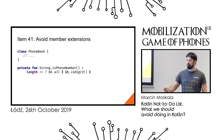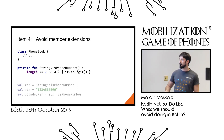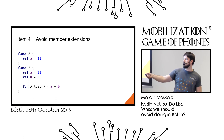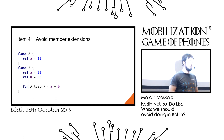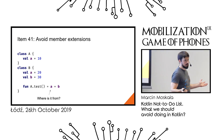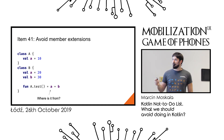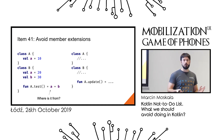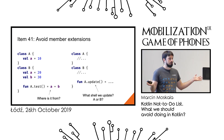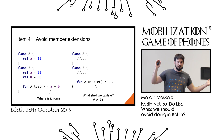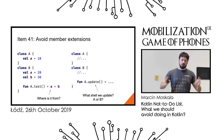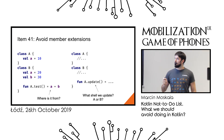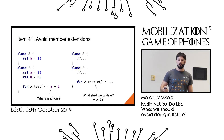Member extensions also cannot be referenced, unlike regular extension functions. When you have a property 'a' that exists in both class A and class B, it's unclear where it comes from. If you have a function with clear side effects like 'update', you might wonder: are you modifying A or B? One developer says A, another says B — nobody knows. So it's better to avoid this confusing notation and avoid member extension functions except in some DSLs where they are necessary.